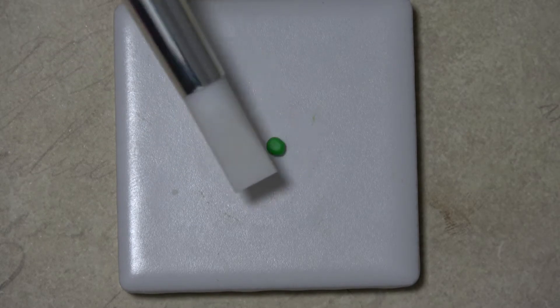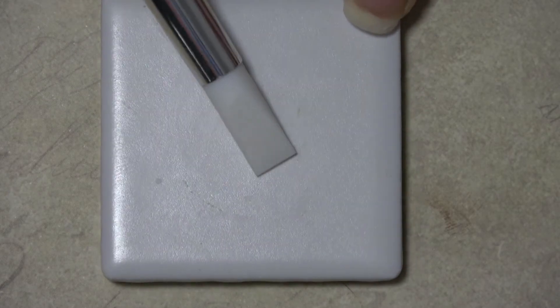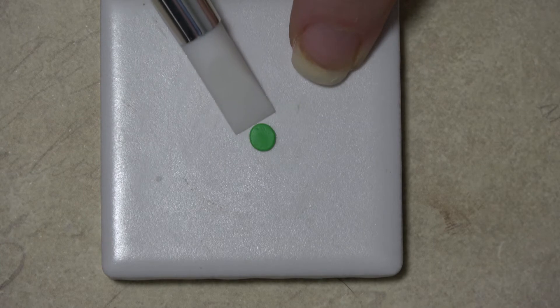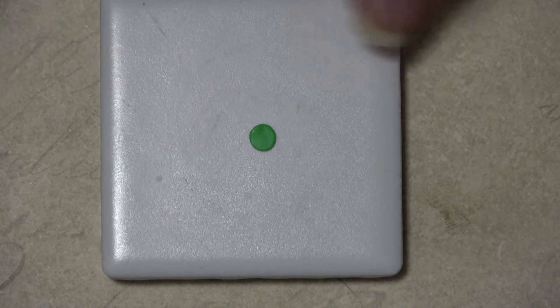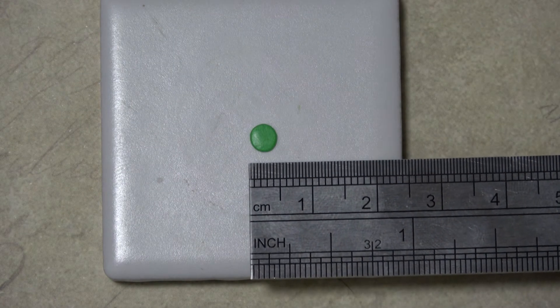Using some scrap clay, roll out a small ball and flatten slightly with the silicone tool or your fingertips. You want this to be about half a centimeter in diameter. Then bake.